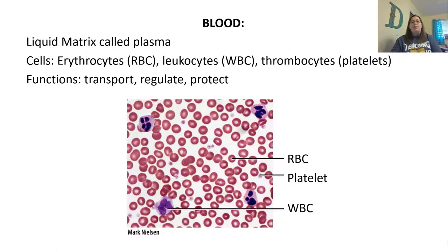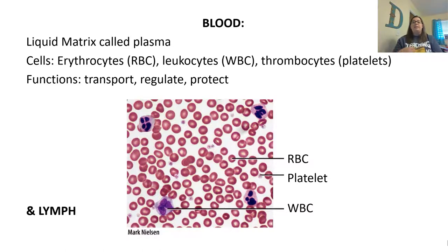Blood is also unique because it has a liquid matrix called plasma. Cells present in blood are erythrocytes (red blood cells), leukocytes (white blood cells), and thrombocytes (platelets). The purpose of blood is to transport nutrients, oxygen, waste products, carbon dioxide, and more. It also helps regulate different parts of your body and offers protection through white blood cells. Lymph is very similar to blood — it has cells and plasma-like fluid, but it's called lymph because it's not in the blood anymore.